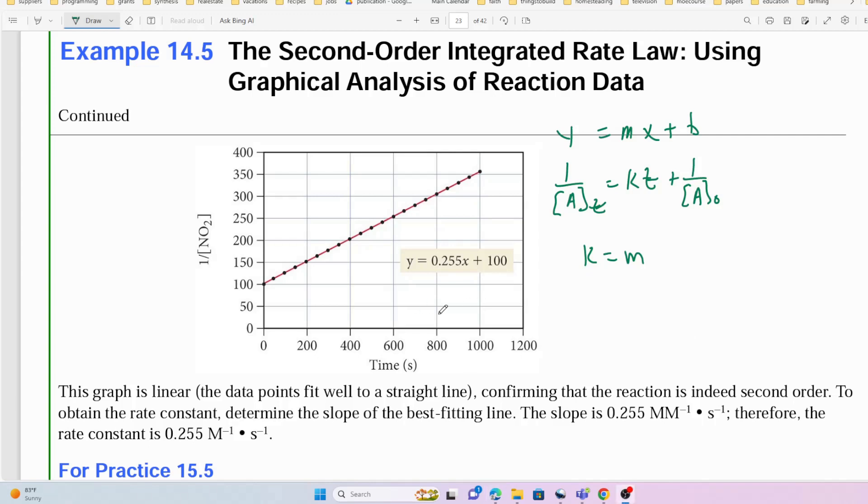So we see here for this equation, on the y-axis we'll need to plot 1 over [A] and we'll plot that against t on the x-axis. So in fact the data has been prepared this way here where we're plotting t versus 1 over the NO2 concentration, and we get the equation for our line.